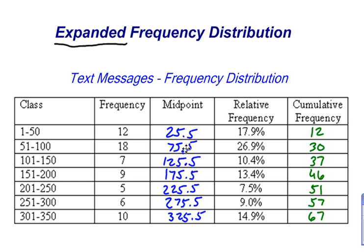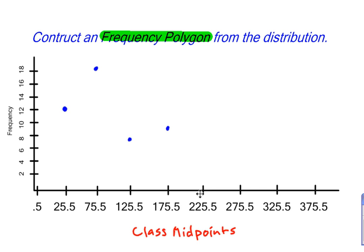Let's get the rest of them in there. The last three are 5, 6, and 10. So at 225.5, I go to 5. At 275.5, I go up to 6. And then finally at 325.5, I go up to 10.